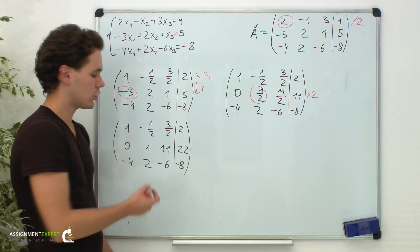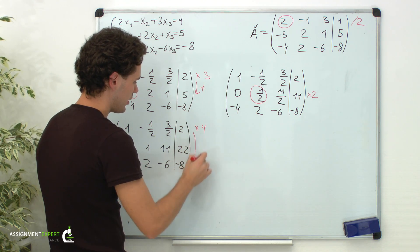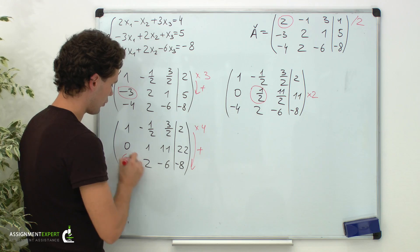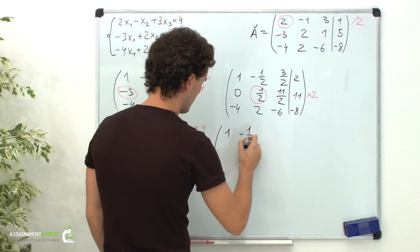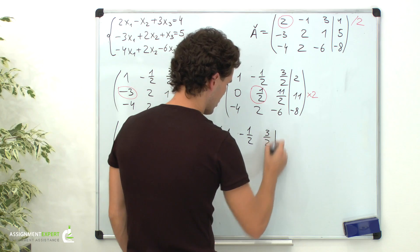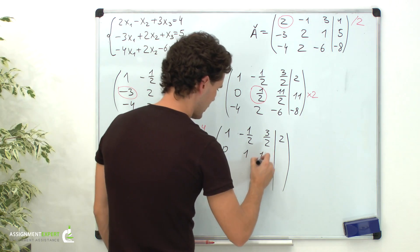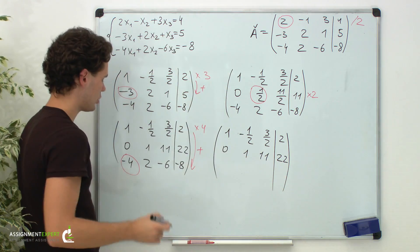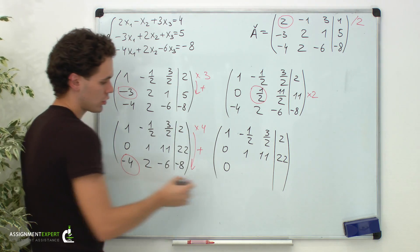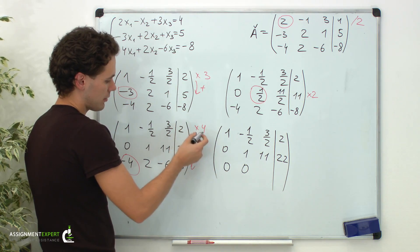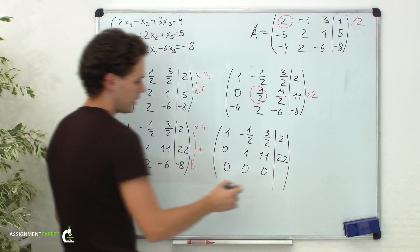Now we will perform the same operation for the third row. To eliminate x1, we will multiply the first row by 4 and add it to the third row. In the first row we have 1, negative 1 half, 3 halves, and 2. In the second row: 0, 1, 11, and 22. For the third row: 1 times 4 minus 4 equals 0; negative 1 half times 4 is negative 2 plus 2, also 0; 3 halves times 4 is 6 minus 6 gives us 0; and 2 times 4 minus 8 is also 0.